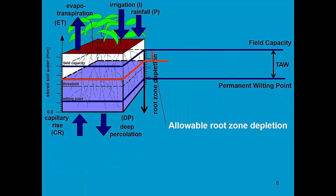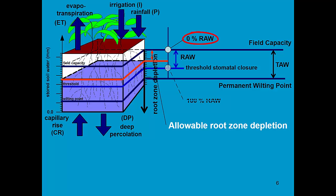To run AquaCrop in the net irrigation requirement mode, the user needs to specify the allowable root zone depletion, which is expressed as a fraction of the readily available water. However, RAW is zero when the soil water content is at field capacity and 100% at the threshold for stomatal closure. So the allowable root zone depletion is expressed as a percentage of RAW.